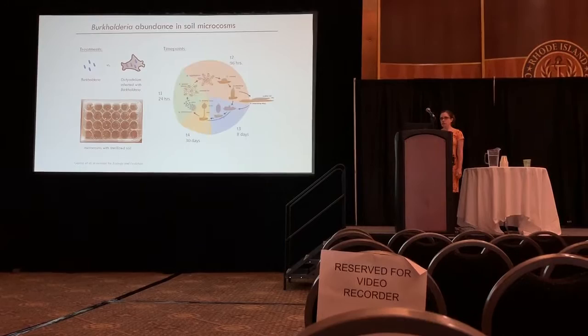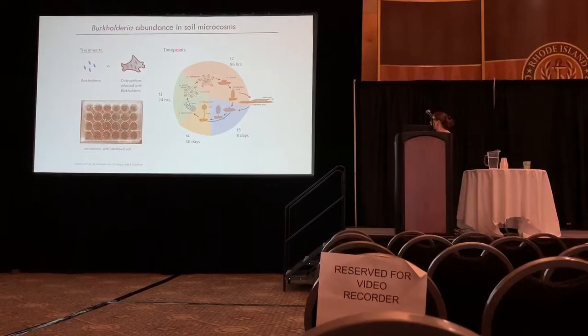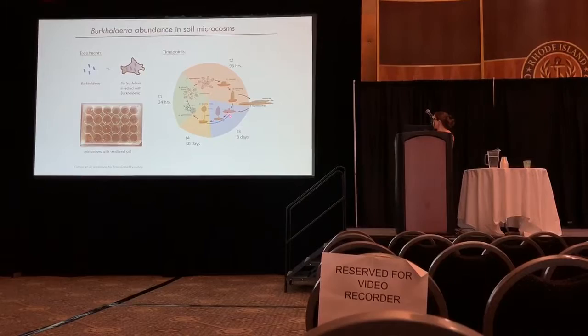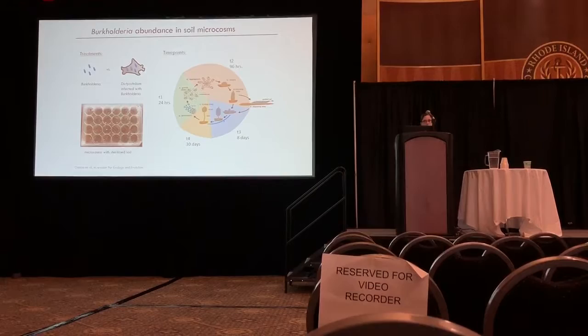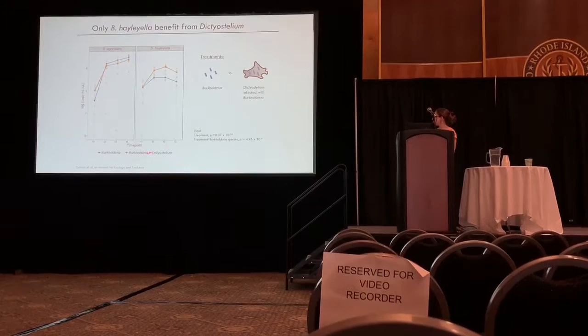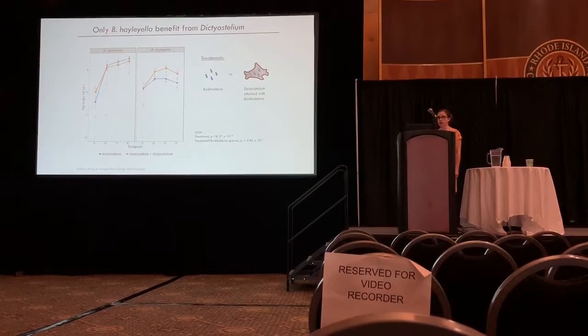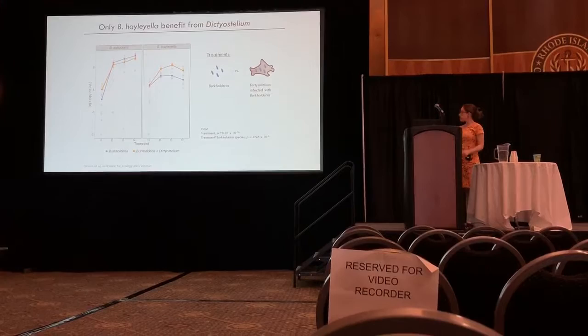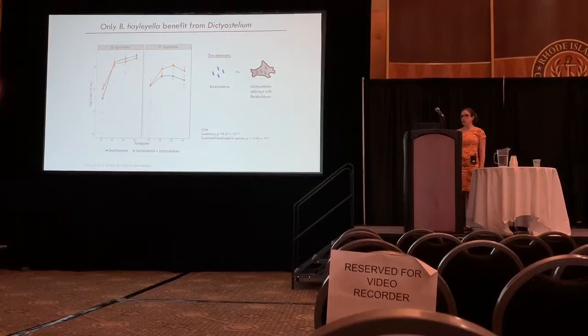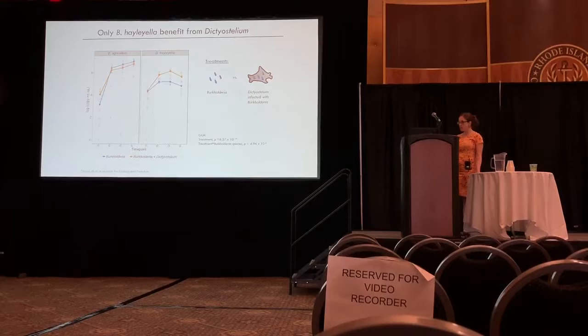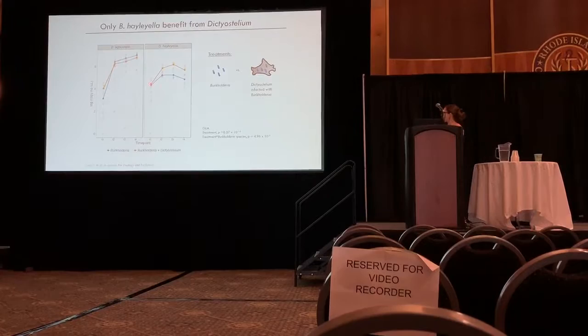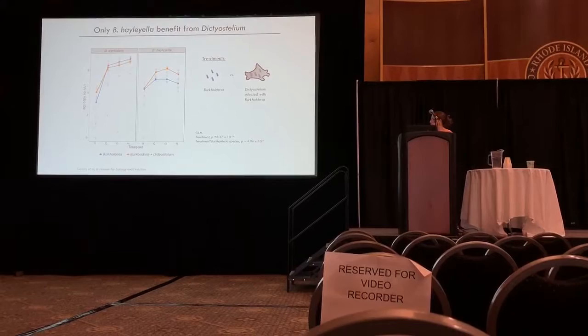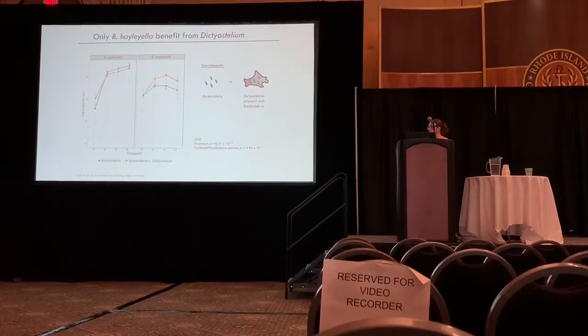I picked time points covering the whole developmental life cycle of Dictyostelium: the amoeba stage, aggregation, early small fruiting bodies, and mature deteriorating fruiting bodies. The data shows log copy number of Burkholderia for the two species — blue is the symbiont alone in the soil, orange is the symbiont with the host. For one species there's not much difference whether it's in the soil by itself or with the host. But for the other species, almost immediately after 24 hours the Burkholderia itself goes to a higher population size when there's no host around — so this is the one that is not as beneficial to the host but can gain some benefit from being without the host.